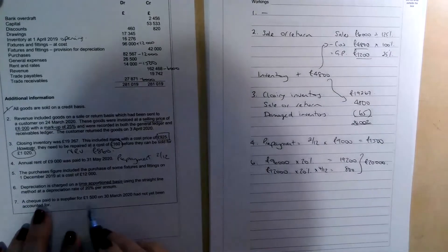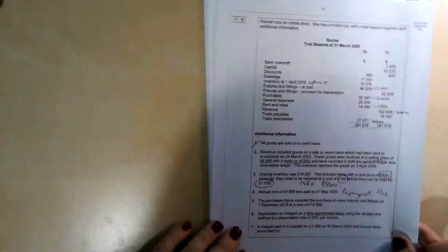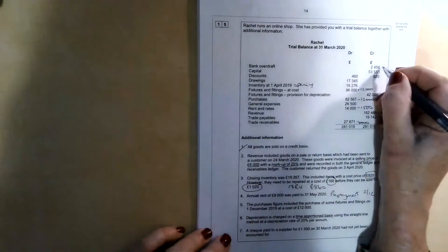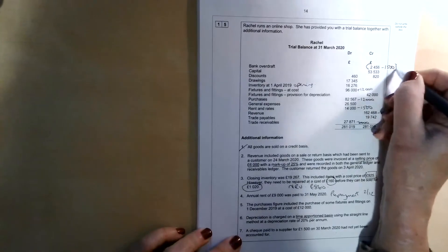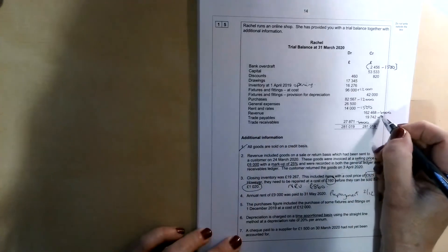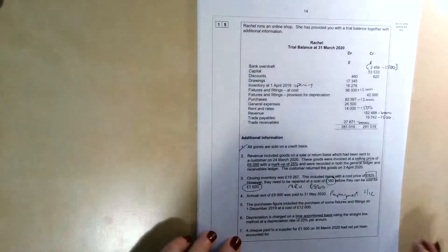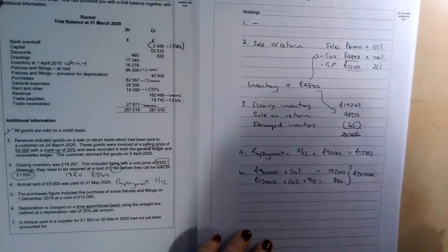Last but not least, we've got a cheque paid to a supplier for £1,500 on the 30th of March, had not yet been accounted for. Well, the double entry for that one is going to be to add it into the bank. So we're going to take £1,500 off of the overdraft or reduce the bank overdraft. We're also going to deduct it from our trade payables. So there's nothing on the income statement that's going to be affected as a result of those adjustments.